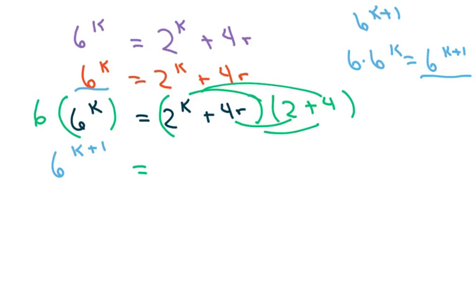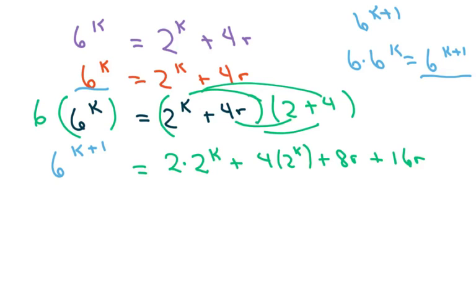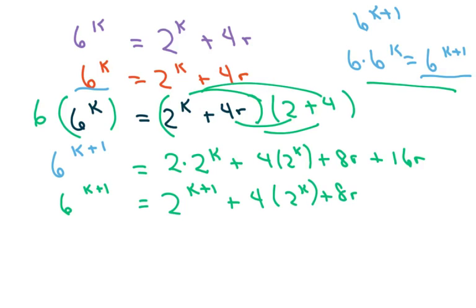We're going to expand using FOIL: 2 times 2^k plus 4 times 2^k plus 8r plus 16r. So we have 6^(k+1) equals 2^(k+1) — based on the same thing we have here — plus 4 times 2^k plus 24r. Now what I'm going to do is subtract 2^(k+1) from both sides.